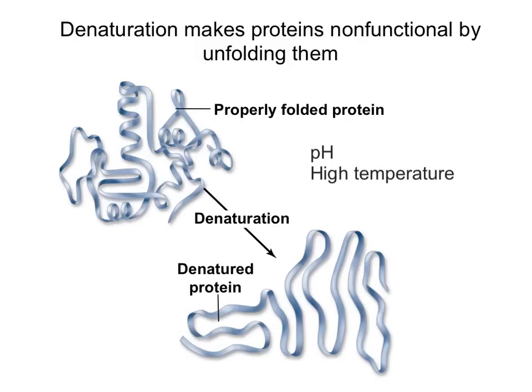Now notice that what makes a protein denature depends on what the protein is meant to be. So for example, proteins in our stomach are used to being in very low pH, or in a very acidic pH, so that for them to denature it will take an even lower pH than for a protein in other parts of our body that are used to a more neutral pH.